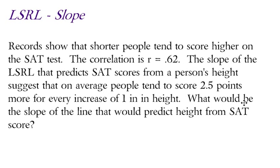Well, you got to figure out which one is your explanatory variable and which one is your response variable. In the first scenario, it says the slope of the least squared prediction line predicts SAT scores from a person's height. So SAT scores in the beginning, in this first scenario, is our response variable. And a person's height is the explanatory variable.